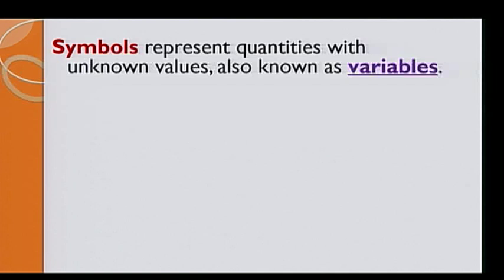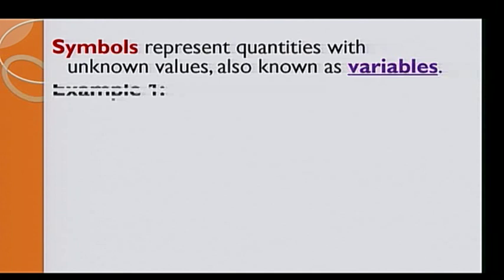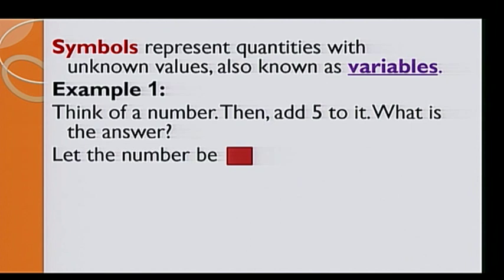Let's have a look at example 1. Think of a number, then add 5 to it. What is the answer? Let the number that we are thinking of be this box. This box symbol represents the number we are thinking of. We don't know what it is. But if I am adding 5 to it, then the answer can be written as the box plus 5.